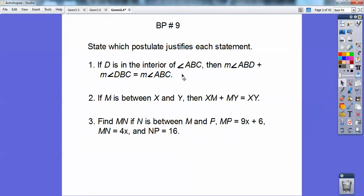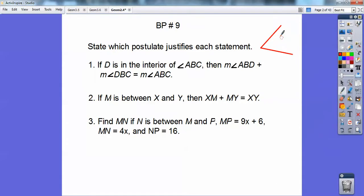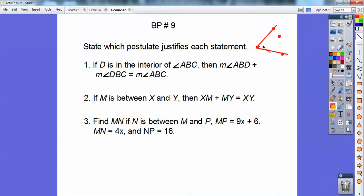So if D is in the interior of angle ABC, say I had this angle ABC right here. Let's just say that this little point right there is A, that little point right there is B, and that little point right there is C, and D is somewhere floating up in there. What this postulate is saying is that the two small angles, this angle right here plus this angle equals the entire angle. That's called the Angle Addition Postulate.